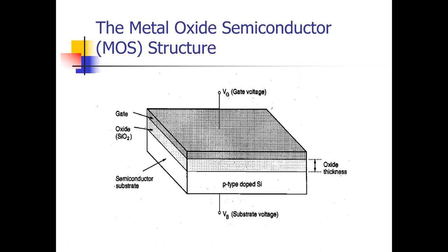Again, the upper part is M, that is for metal. In between there is an oxide layer, that is O, and the lower part is semiconductor, that is S. That's why it's called Metal Oxide Semiconductor Field Effect Transistor. Here, if it's an N-channel, the substrate will be P-type. If it's a P-channel, the substrate will be N-type.